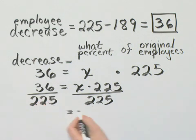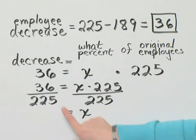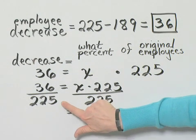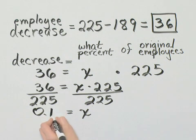Now what do I have left on the right side? I have simply X, because the 225s divide out. Now I'll let you divide 225 into 36. If you do so, you'll have 0.16.